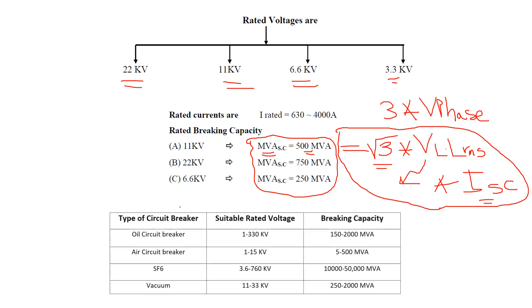The circuit breakers used in medium voltage include oil circuit breakers, air circuit breakers, SF6 circuit breakers, and vacuum circuit breakers. Oil circuit breakers operate from 1 kV up to 330 kV, covering both medium and high voltage levels, with breaking capacities from 150 MVA up to 2000 MVA.